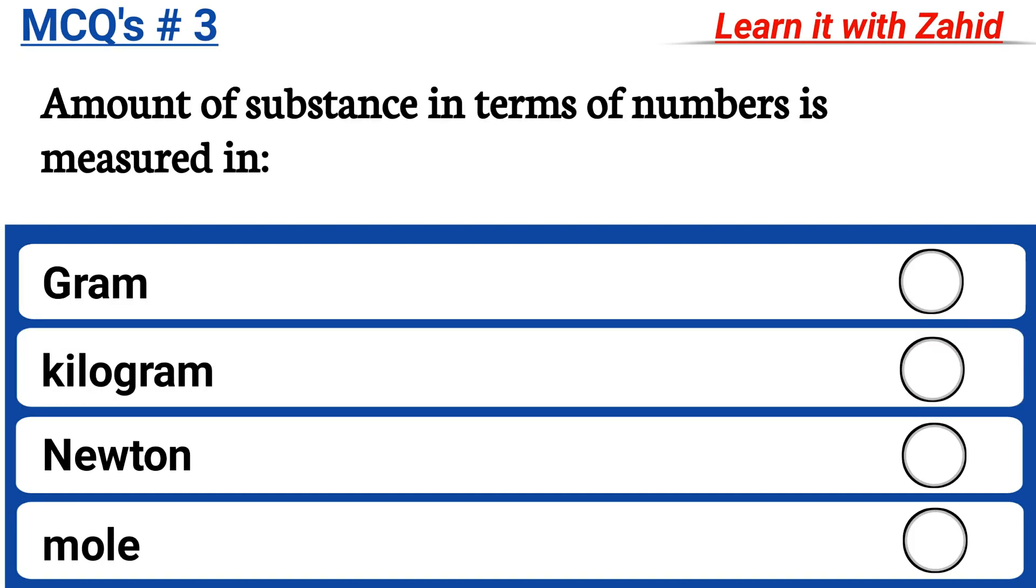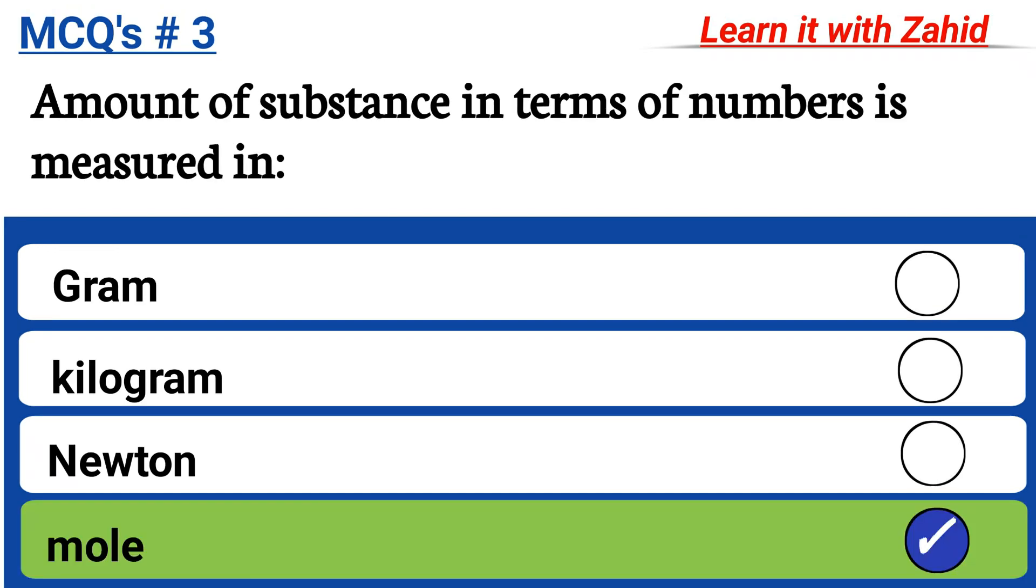Amount of Substance in terms of numbers is measured in Gram, Kilogram, Newton, Mol and the correct answer is Mol.